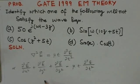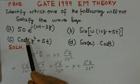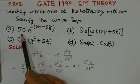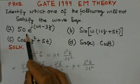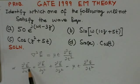So this is the wave equation, and what we have to do is we have to substitute these options for the electric field, for E, and find the solution.